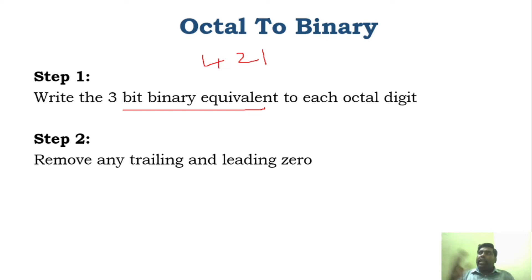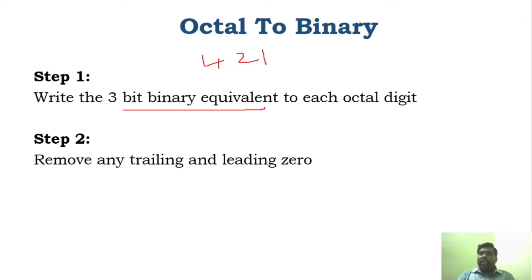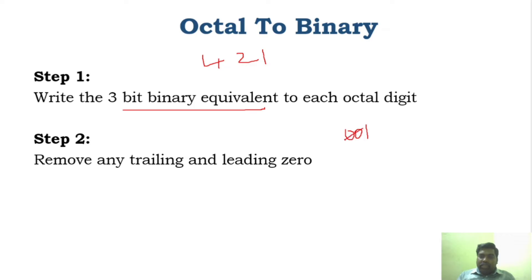Then you have to combine all those values, and if there are any trailing zeros or leading zeros, you can remove them. In binary to octal conversion, if there is only one bit at the end, we add two zeros. Here, for octal to binary, if there are any leading zeros you can remove them — just the opposite of that. So, we will now see the problem.